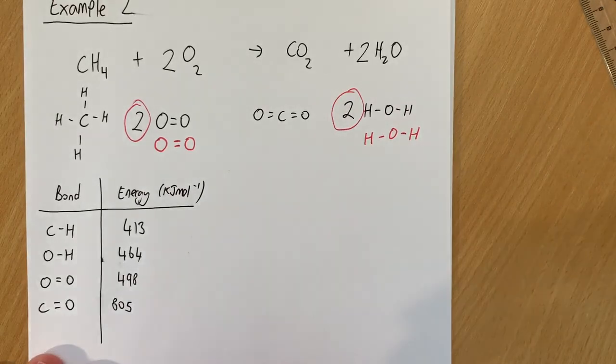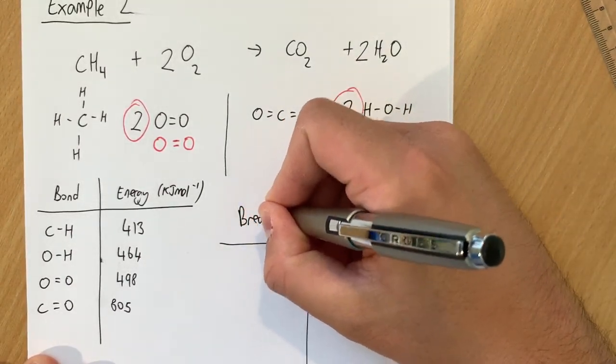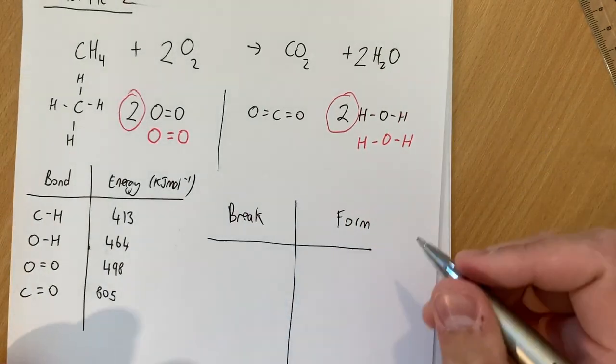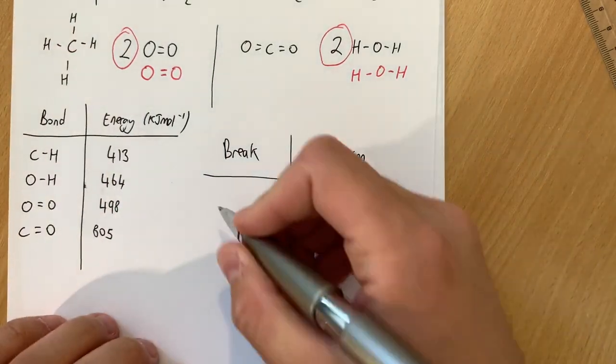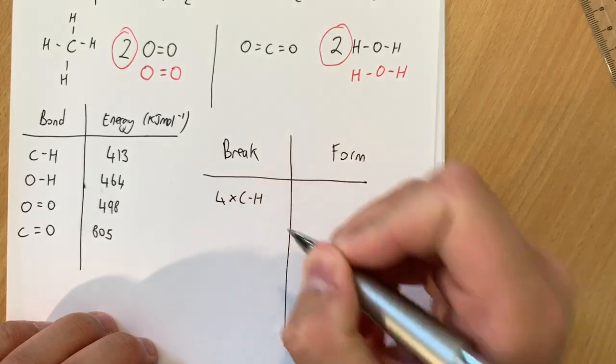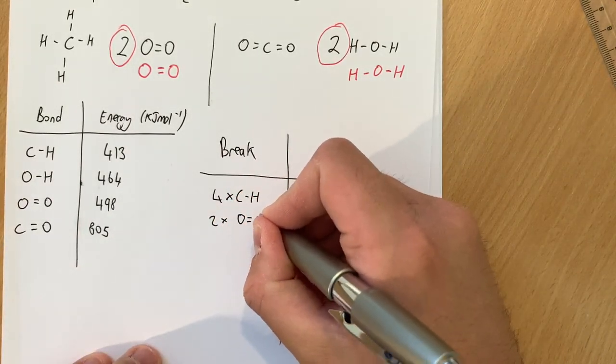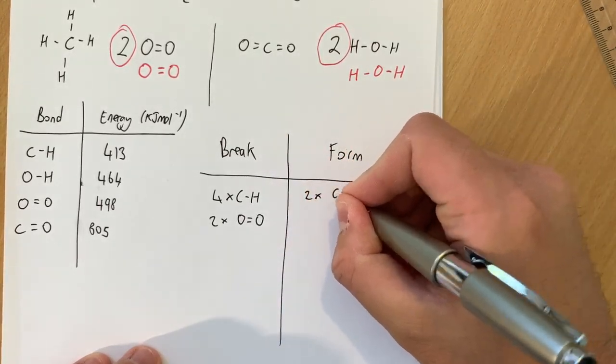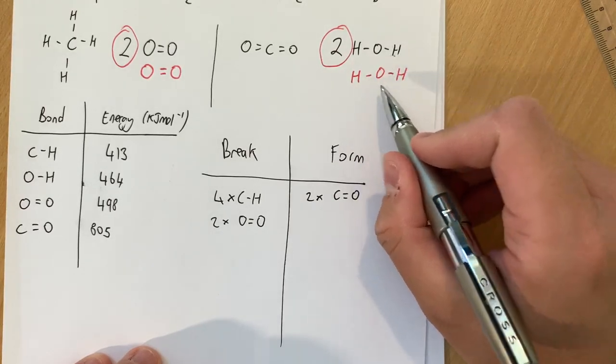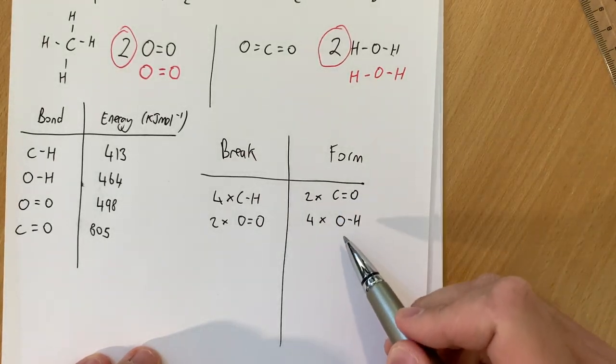Okay so what we can see again now is we've got the stuff on the left and the stuff on the right. So what I'm going to do again is the energy needed to break and the energy needed to form. And remember I'm counting the bonds. So here I've got 1, 2, 3, 4 lots of C-H. And I've got 1, 2 lots of O double bond O. And on this side I've got 1, 2 lots of C double bond O. And I've got 1, 2, 3, 4 lots of O-H. Remember we're counting the sticks in this instance.